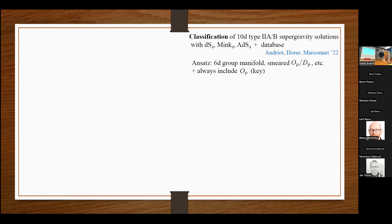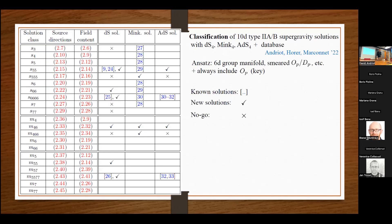The key point in the classification is that we always include orientifolds, and the classification is done according to the orientifolds. That's a table from the paper. These are the solution classes; the numbers correspond to which type of orientifold you put. According to which orientifold you put, you can only have certain D-branes and fluxes compatible with it, and certain geometry. We then looked for de Sitter, Minkowski, or anti-de Sitter solutions known for all these classes. When there were known solutions, we put a reference, and we also looked for new solutions.